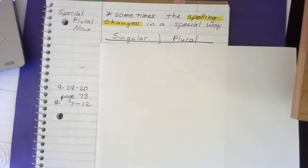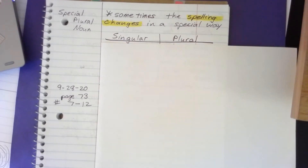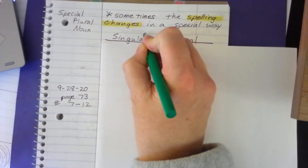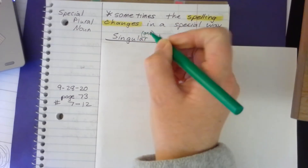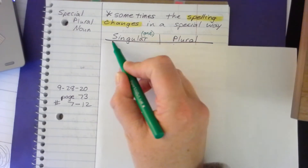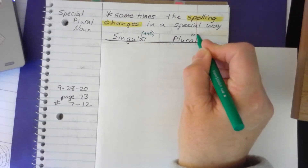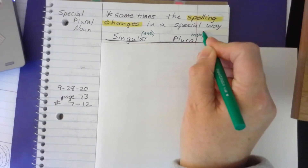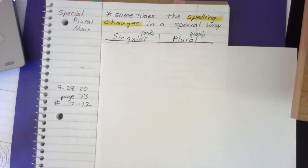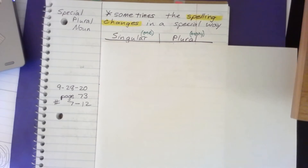We're going to make a box. We'll put 'singular,' which means one, and 'plural,' which means many. So singular means one — single is in there — and plural means many. Singular is one and plural is many.